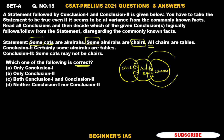Now what about the next statement: all the chairs are tables. All chairs, including that 'some' portion, are nothing but tables. With this we need to identify the conclusions. Check: some almiras are tables — yes, this statement is right. Since some almiras are chairs, and all chairs are tables, therefore some almiras are tables. This first conclusion is correct.